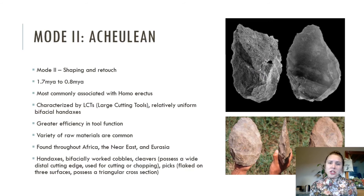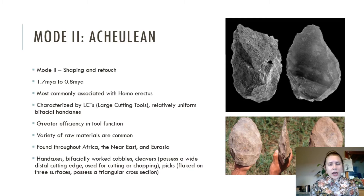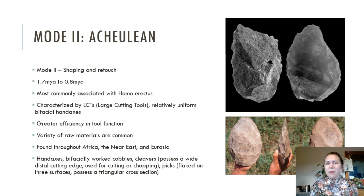The next technology we're looking at is classified as Mode 2, also known as the Acheulian industry. This corresponds with the Lower Paleolithic and the Early Stone Age as well, spanning from about 1.7 million years ago to about 800,000 years ago. Mode 2 is defined by shaping and retouching rather than simple flaking, and later on towards the end of the Acheulian, soft hammer use. The main difference between Mode 2 and Mode 1 includes the intentional modification of a blank to create a specific tool form. This is most commonly associated with Homo erectus, but this technique and tool type continues to be used by Homo sapiens and Neanderthals as well.